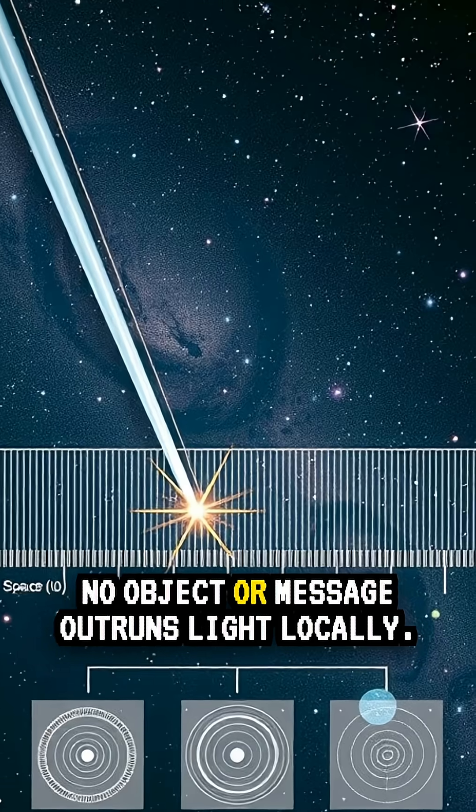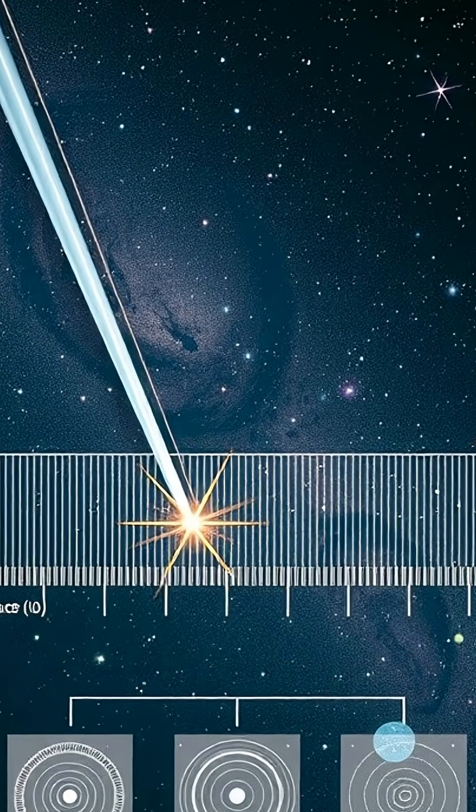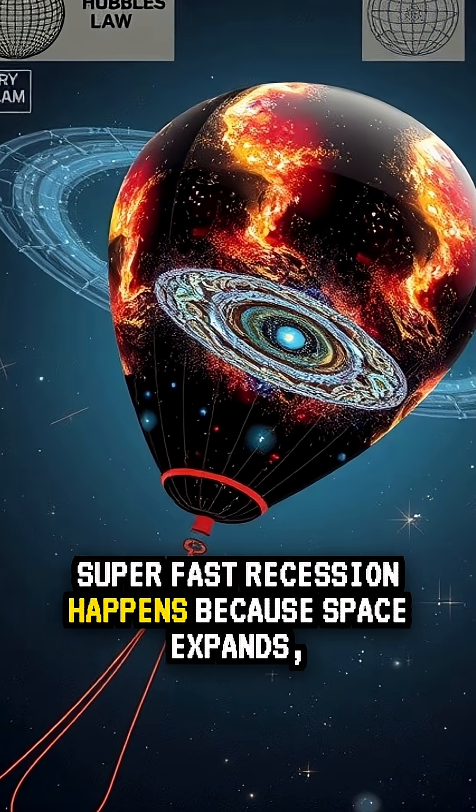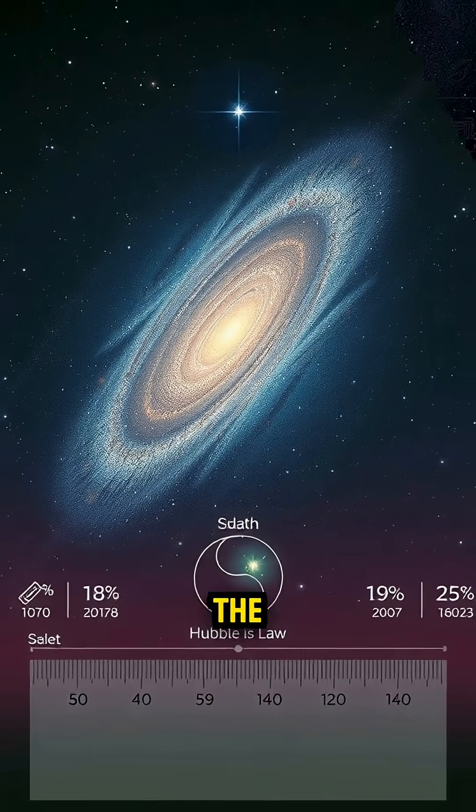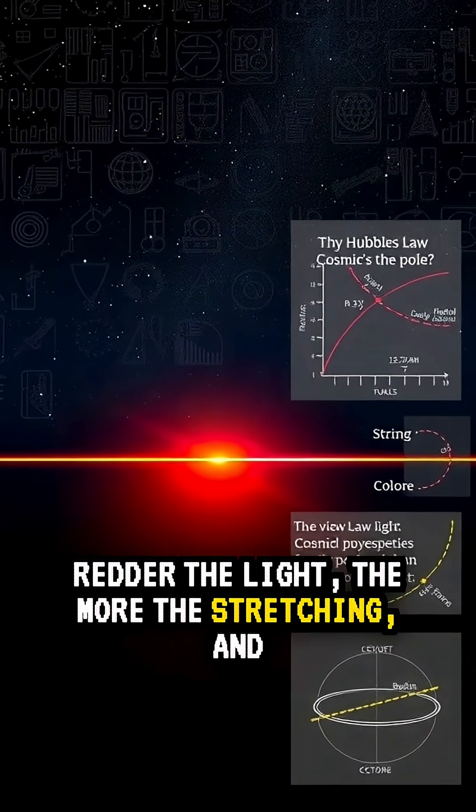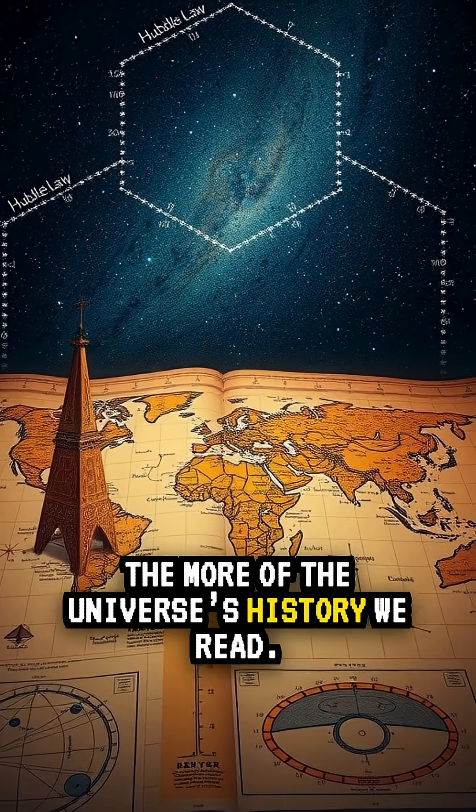Recap. No object or message outruns light locally. Super-fast recession happens because space expands, not because galaxies break the speed limit. The redder the light, the more the stretching, and the more of the universe's history we read.